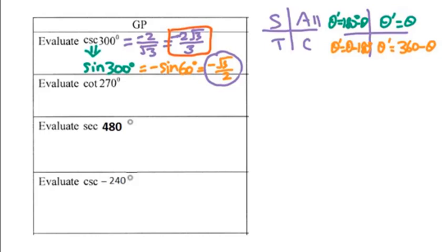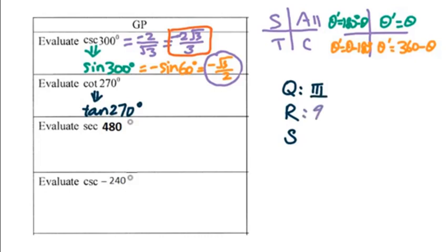Now let's go to cotangent 270 degrees. We need to figure out tangent 270 degrees first. Since 270 degrees is between the third and fourth quadrant, we use QRS with the third quadrant. The reference angle is 90 degrees, and tangent is positive in the third quadrant. So we get positive tangent 90 degrees, which is undefined. For cotangent, we take 1 over undefined, which gives us 0.